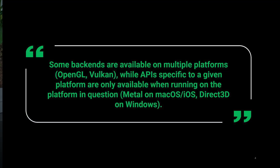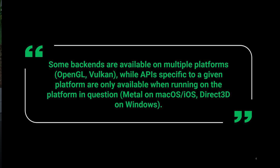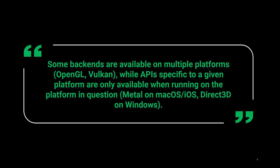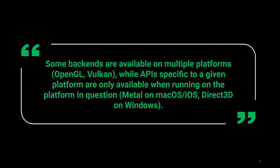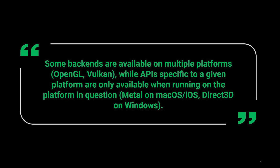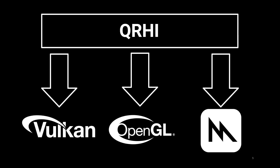And why did they implement something like this? Straight from the docs: some backends are available on multiple platforms like OpenGL and Vulkan, while APIs specific to a given platform are only available when running on that platform — Metal on macOS, Direct3D on Windows. In simple terms, this means Qt 6 gives you the flexibility to choose the best graphics backend for your platform. No more being locked into just OpenGL — whether it's Vulkan, Metal or Direct3D, Qt will adapt to maximize performance and compatibility.